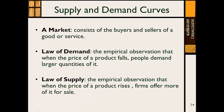Then we will get into one of the most famous laws. A law in economics is generally what is observed to be true. So the law of demand is what's generally observed to be true with empirical data. The law of demand is specifically the empirical observation that when the price of a product falls, people demand larger quantities of it, all else equal. Without anything else changing, if the price falls, people demand larger quantities of it.